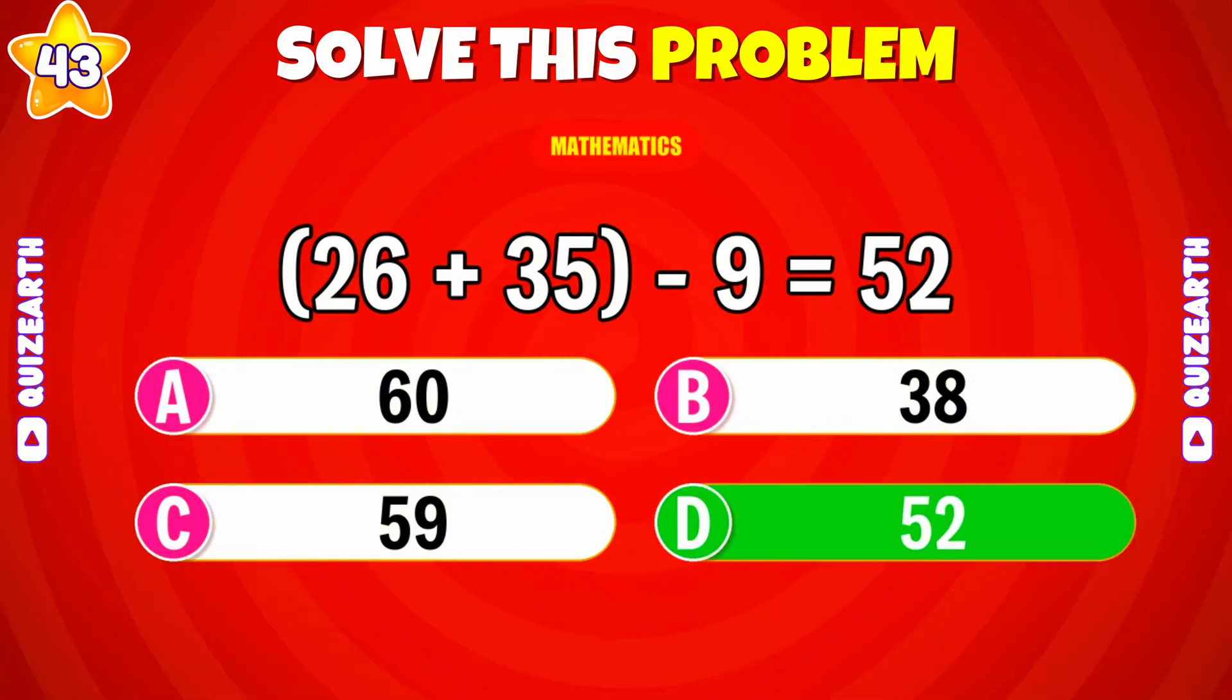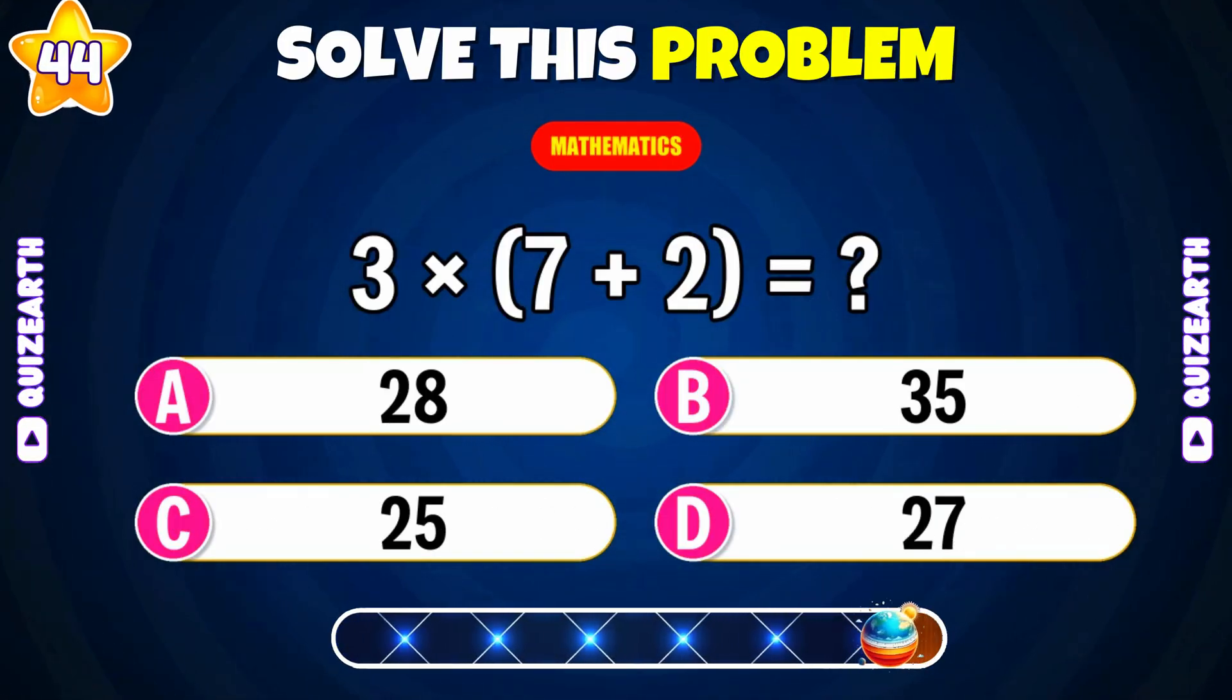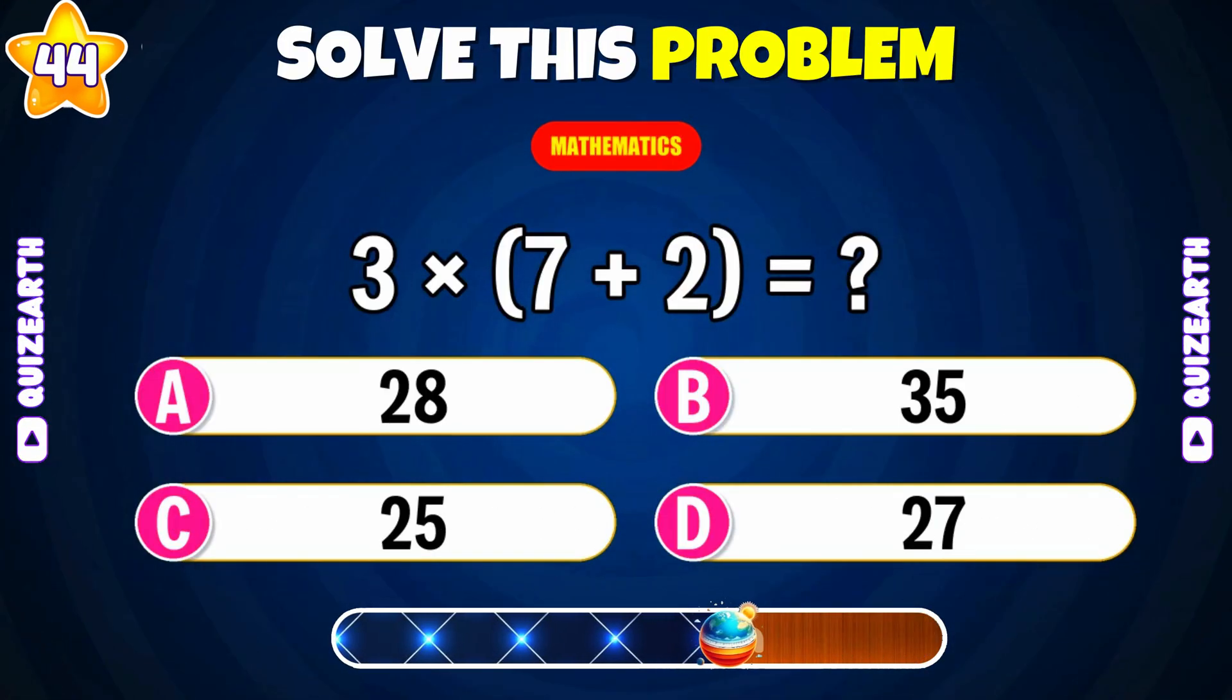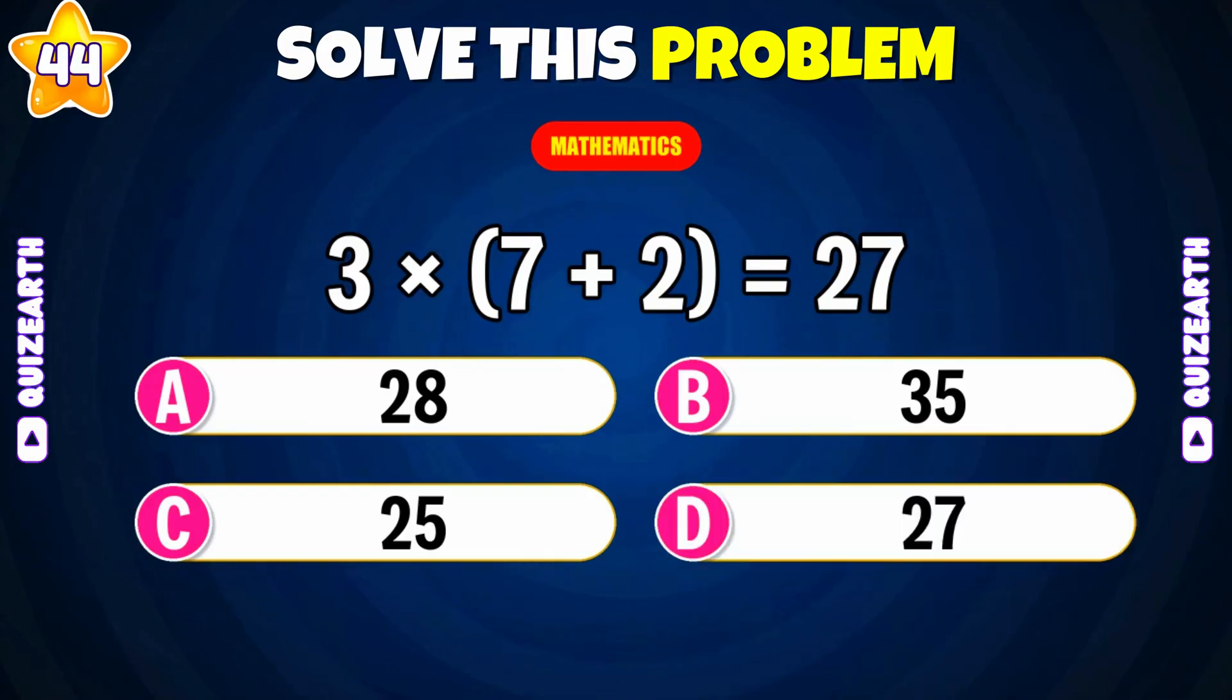26 plus 35 minus 9. That's right. 52. Next. 3 times 7 plus 2. Exactly. 23.